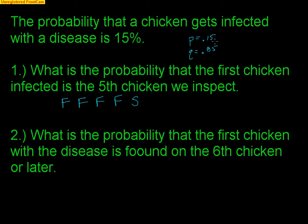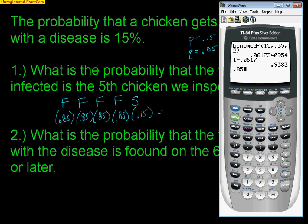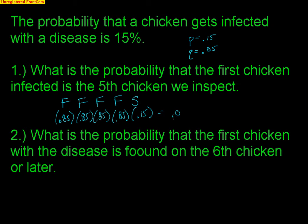So in this problem, we have not infected 0.85, not infected 0.85, not infected 0.85, not infected 0.85, and the first chicken that is infected is our fifth chicken at 0.15. That's it — there's no other way this can happen. I don't have to figure out how many different ways this can happen or do any combinations like 15 choose 4. There's none of that because this is the only way your fifth chicken could be the first success. The only shortcut: 0.85 to the fourth times 0.15. That gives 0.0783.